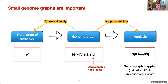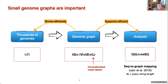We want the genome graph size to be small because many subsequent analyses are related to that size. For example, Jain et al. in 2019 showed that the running time of sequence-to-graph mapping is related to the total size of genome graph labels plus the number of edges, times the length of the sequence being aligned. This motivates directly optimizing for the size of the genome graph — constructing a graph that encodes our sequences but is as small as possible.